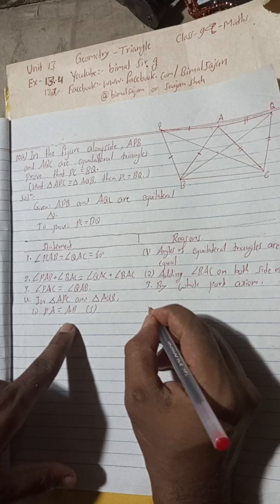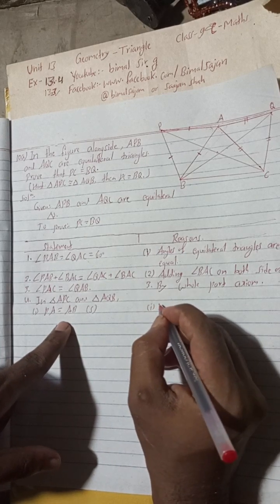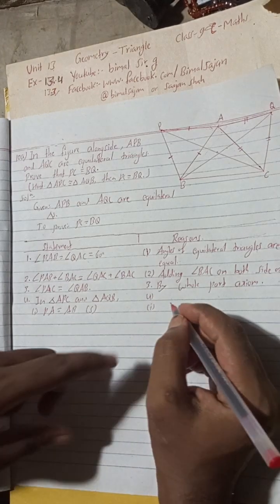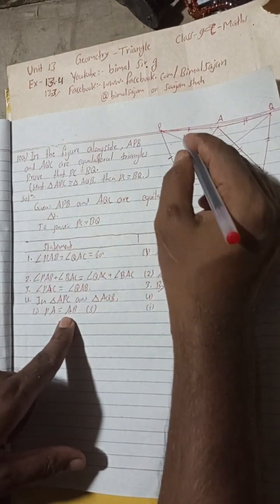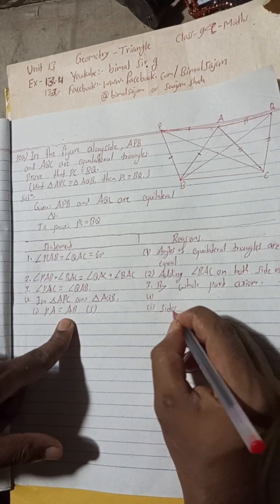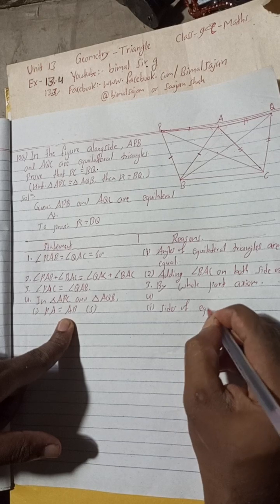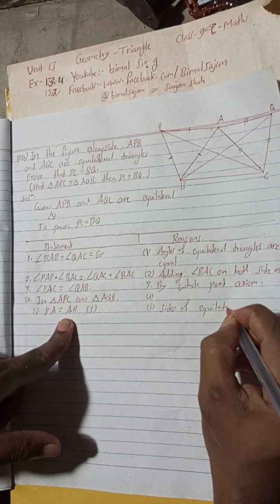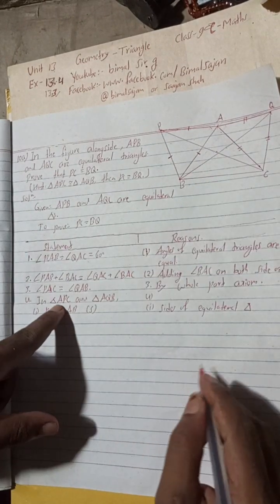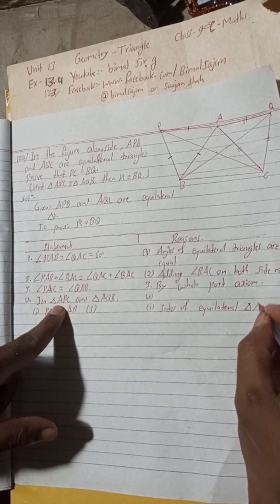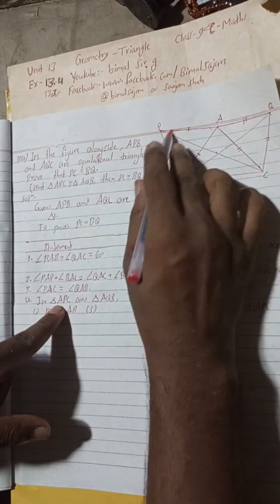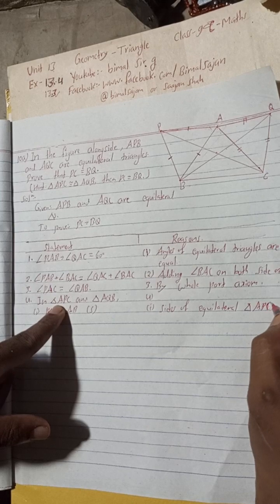The reason for this is: these are the sides of the equilateral triangle APB.